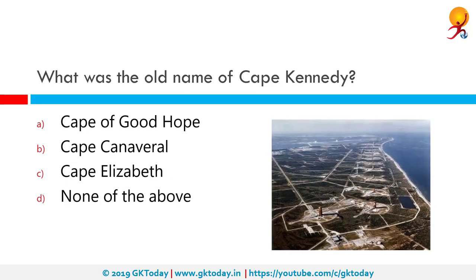Which offers the old name of Cape Kennedy? The correct answer is Cape Canaveral. Cape Canaveral, from the Spanish Cabo Cañaveral, is a cape in Brevard County, Florida, United States, near the center of the state's Atlantic coast. It is now known as Cape Kennedy. Between 1963 and 1973, the name was changed to Cape Kennedy. It lies east of Merritt Island, separated from it by the Banana River. It was discovered by Spanish explorer Juan Ponce de León in 1513.